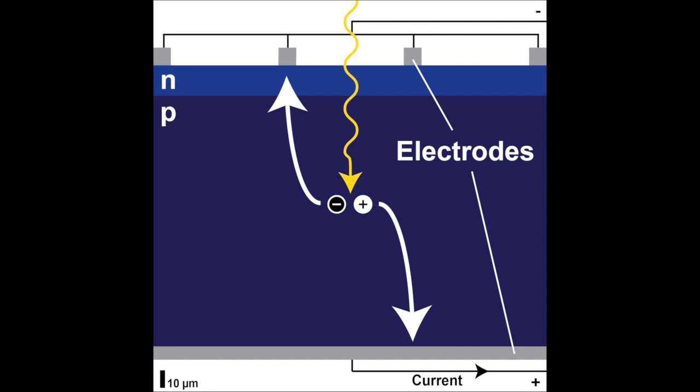When light is absorbed in the middle layers, it gives its energy to electric charges that can flow out of the electrodes as electricity.